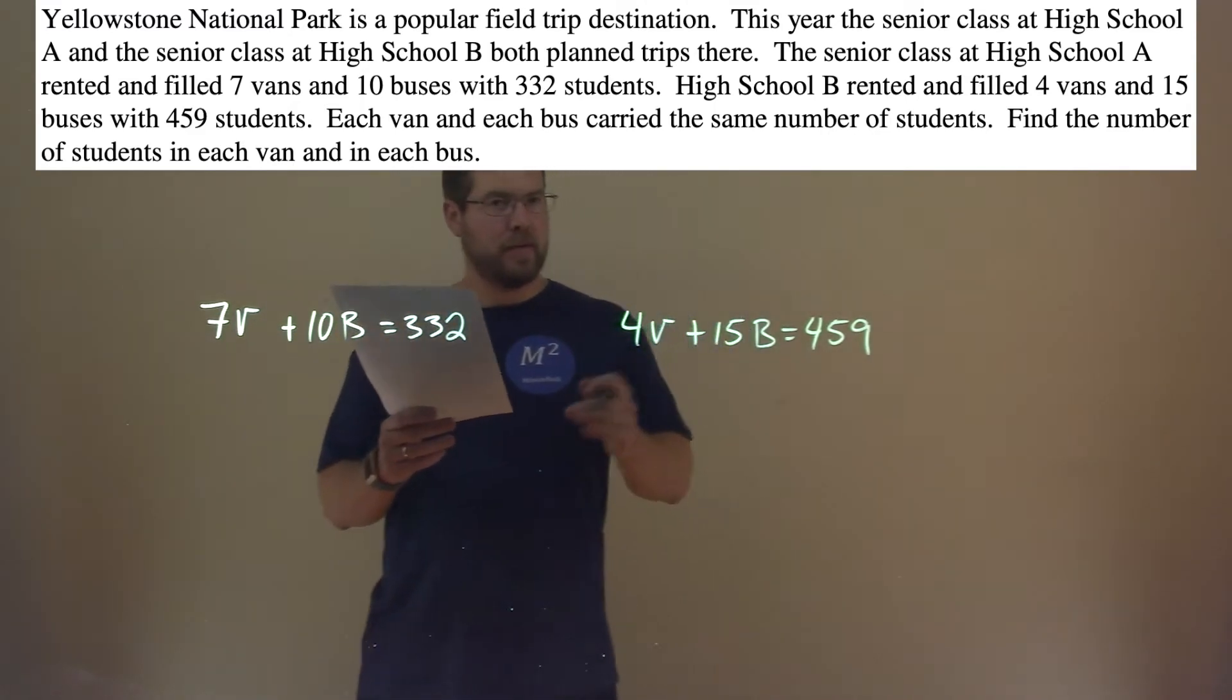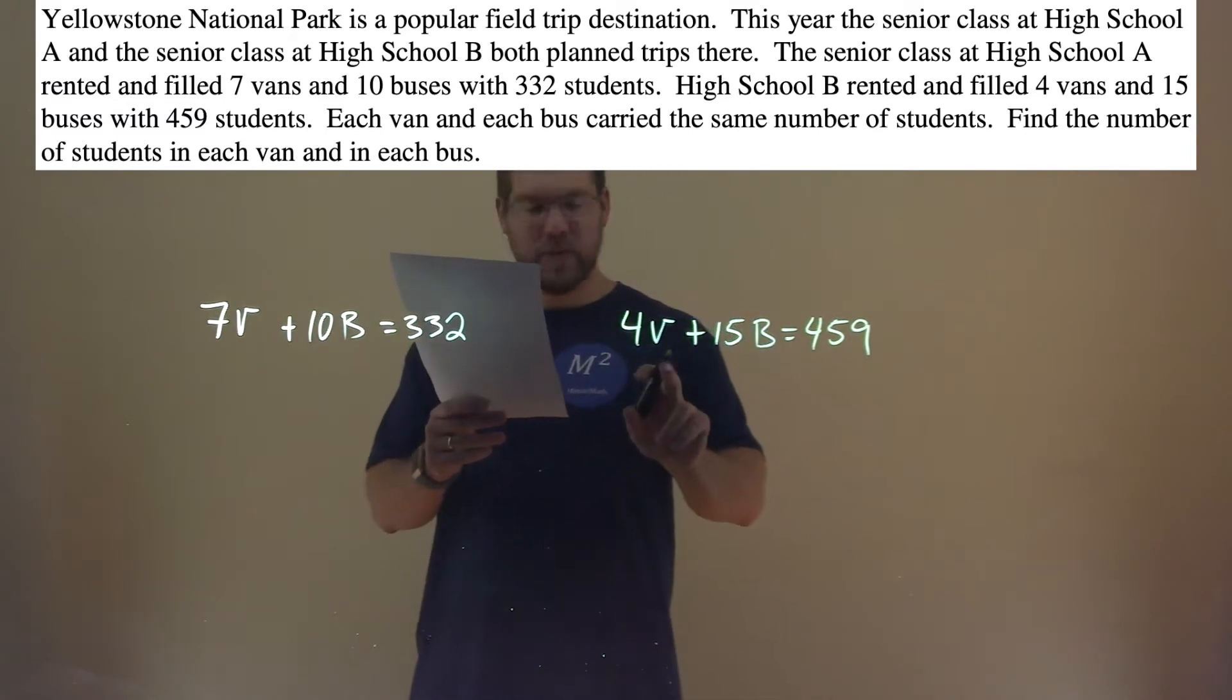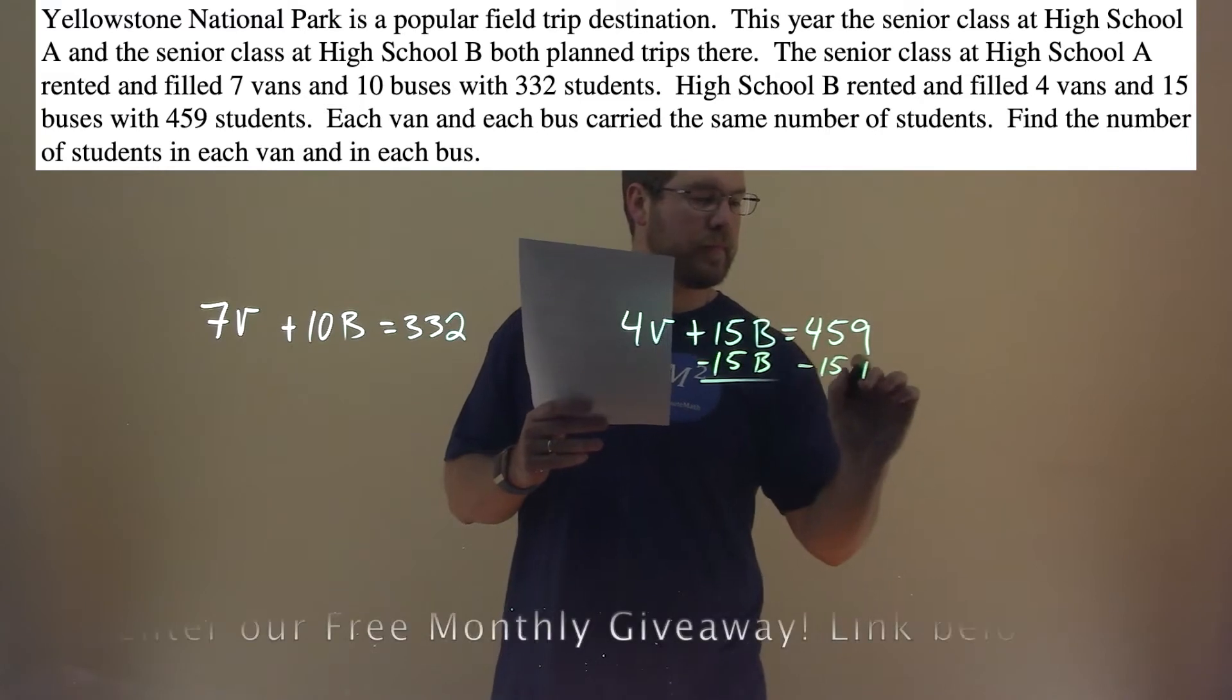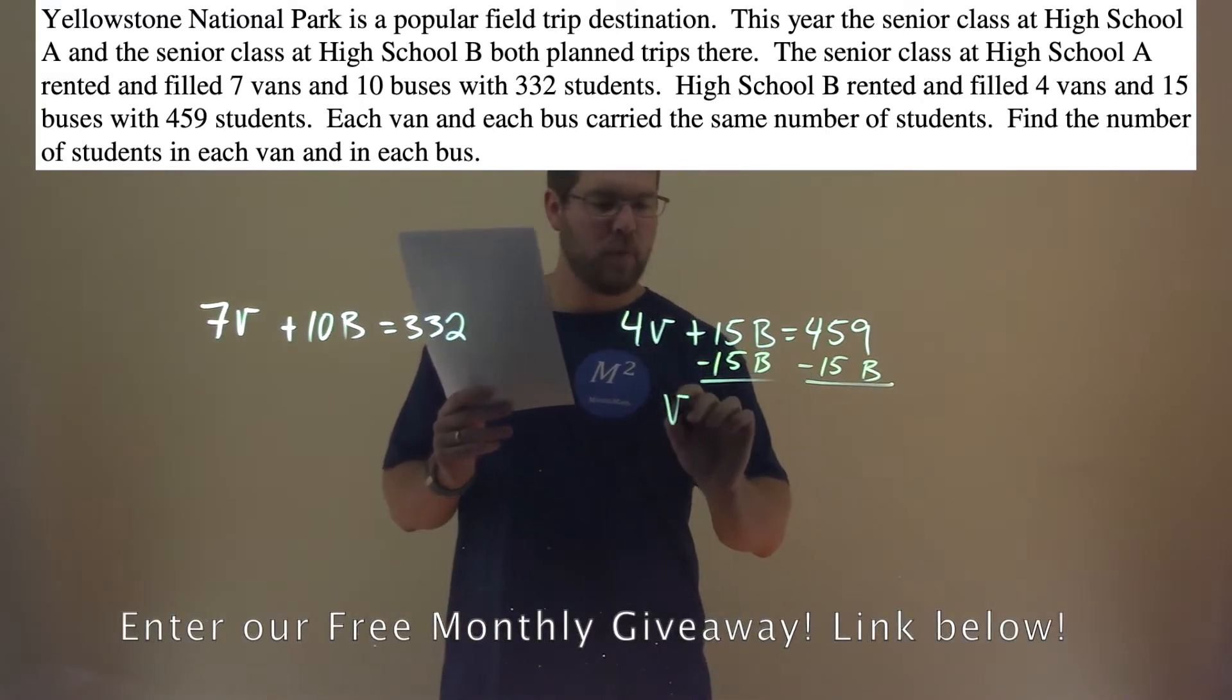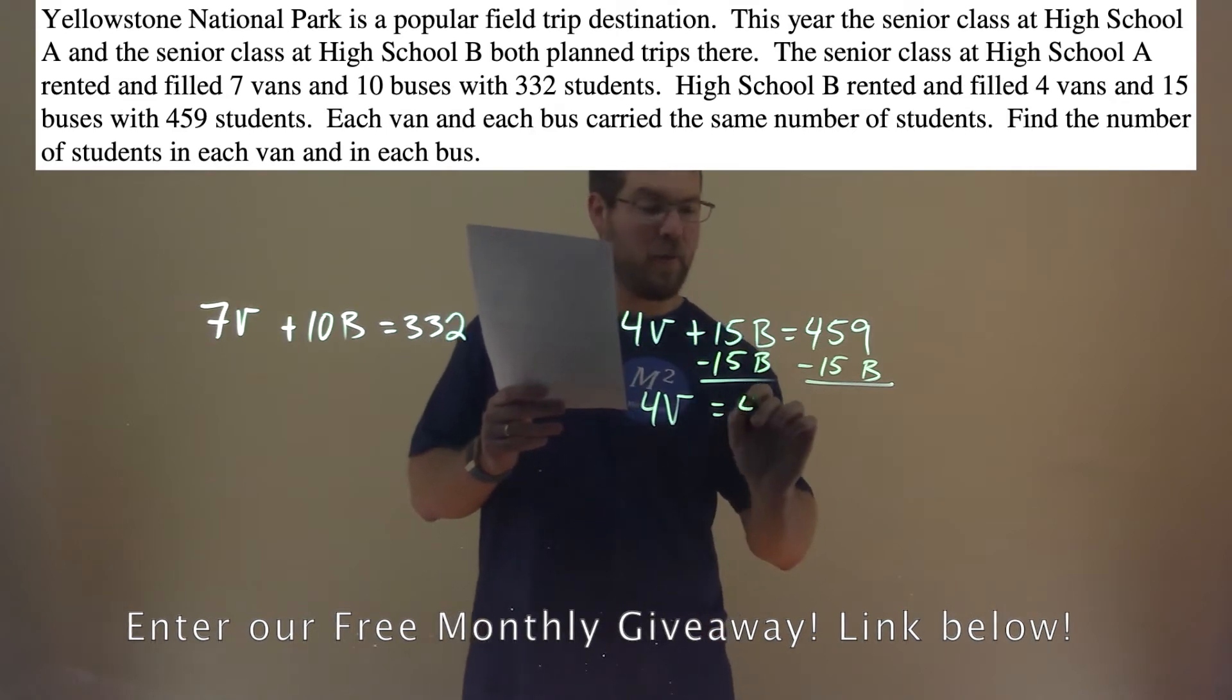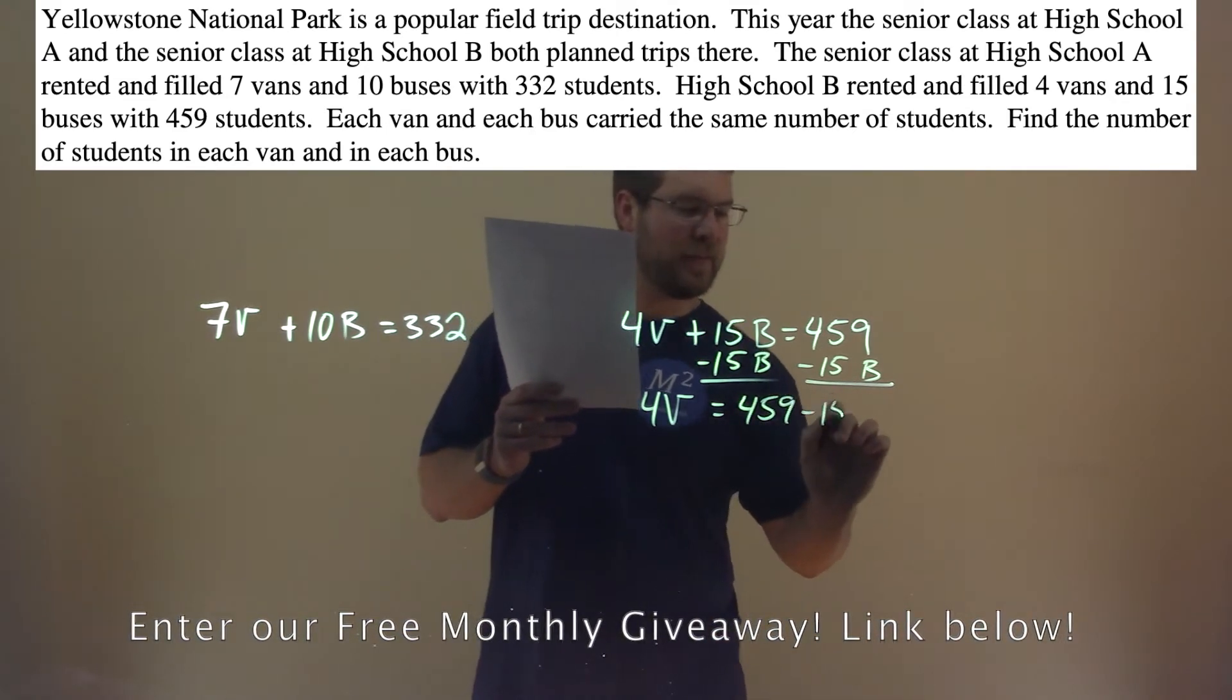I'm going to do this one by substitution. I'm going to get this v by itself first. So I subtract 15b from both sides, and we have 4v equals 459 minus 15b.